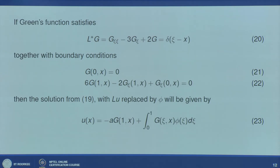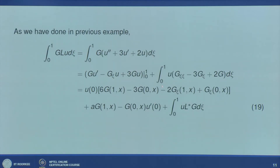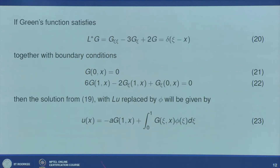If the Green function satisfies these properties, then u(x) = −A·g(1,x) + ∫₀¹ g·φ dξ. However, solving this g is not easy because it cannot be done by direct integration.